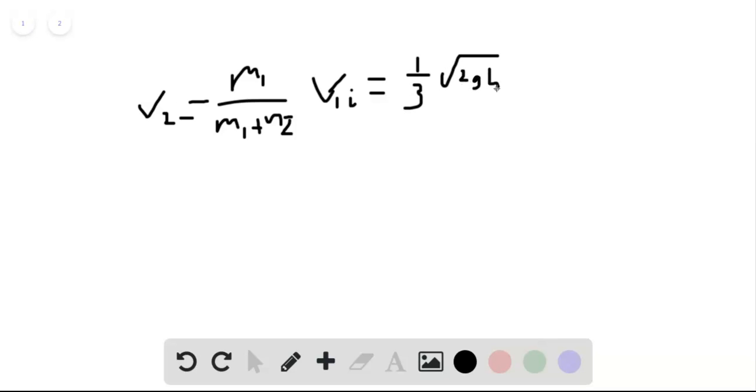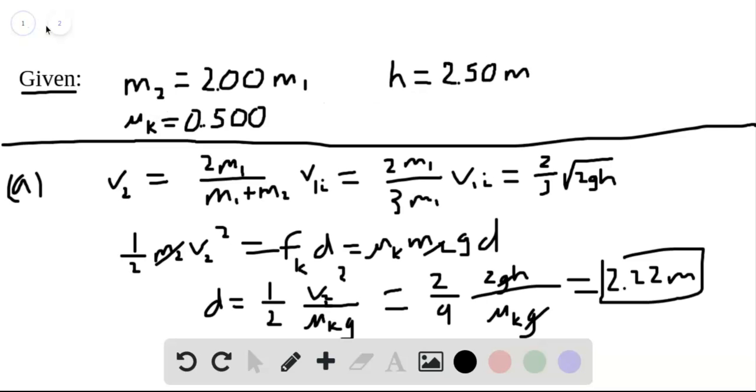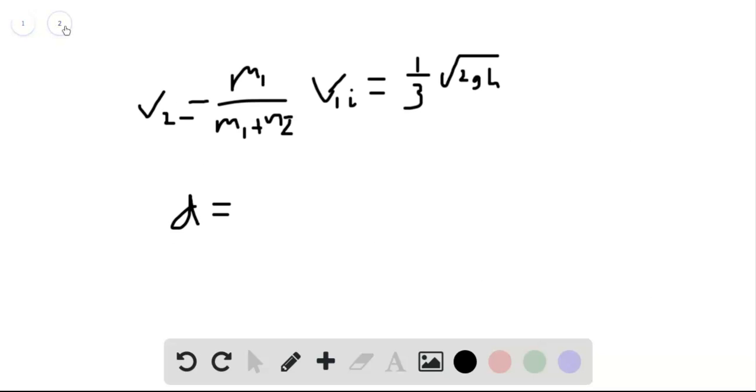So this is going to be equal to 1 third times root 2 G H. Now if we plug 1 third into that expression, D equals 1 half V squared over mu k times G. If we square V, that's 1 ninth. So 1 ninth times 1 half is 1 18th, times 2 G H over mu sub k G.